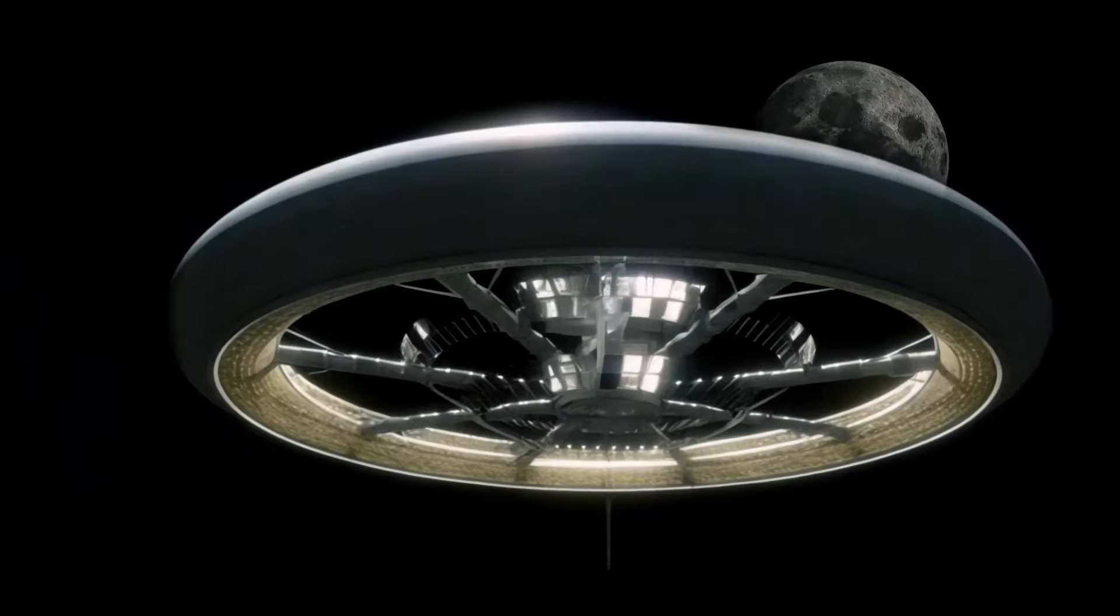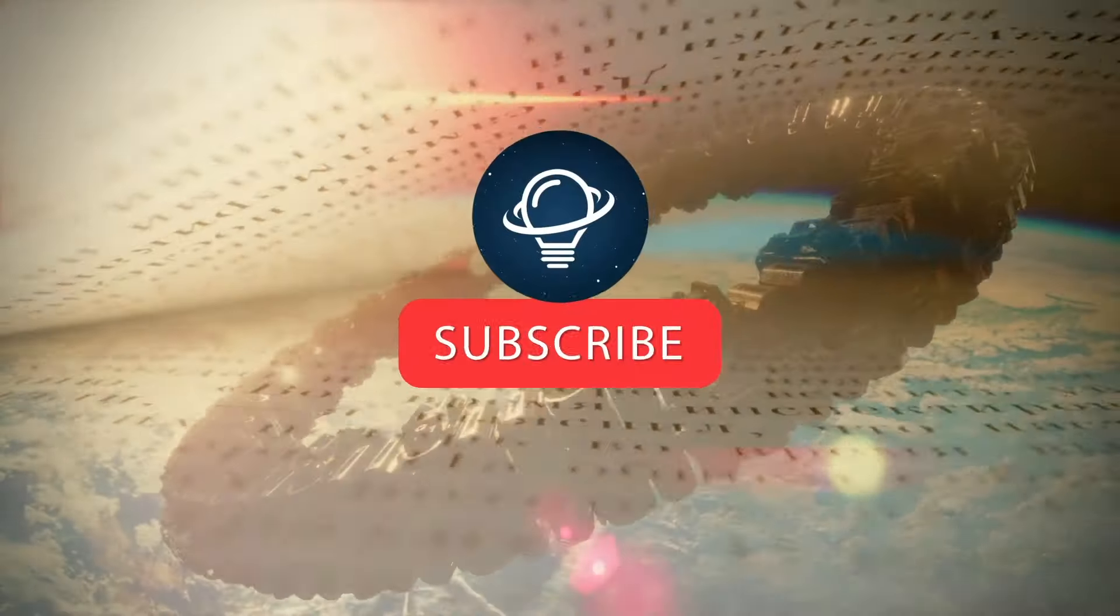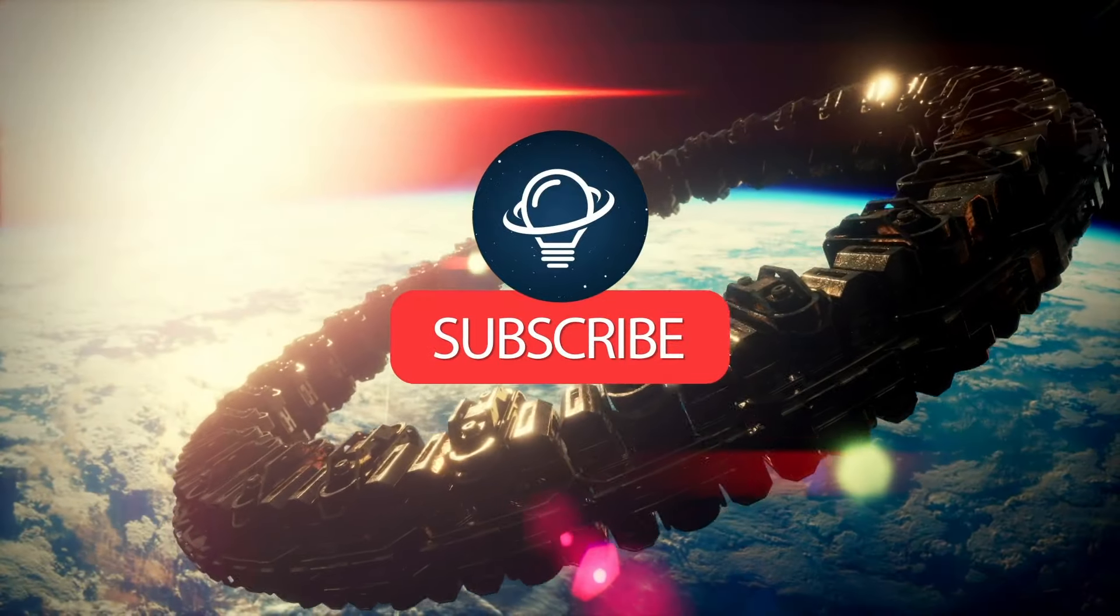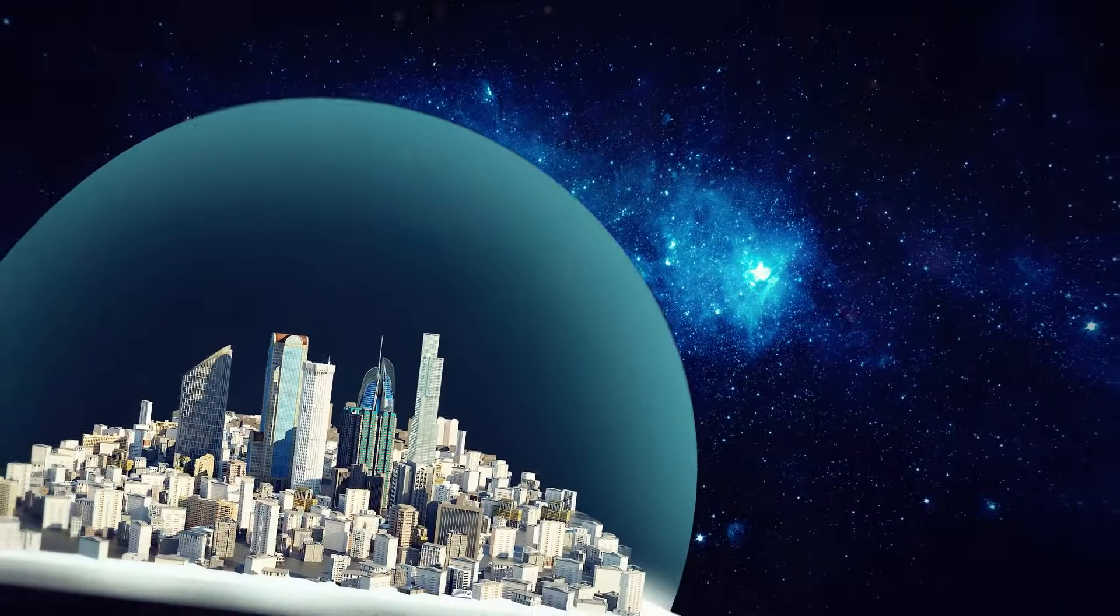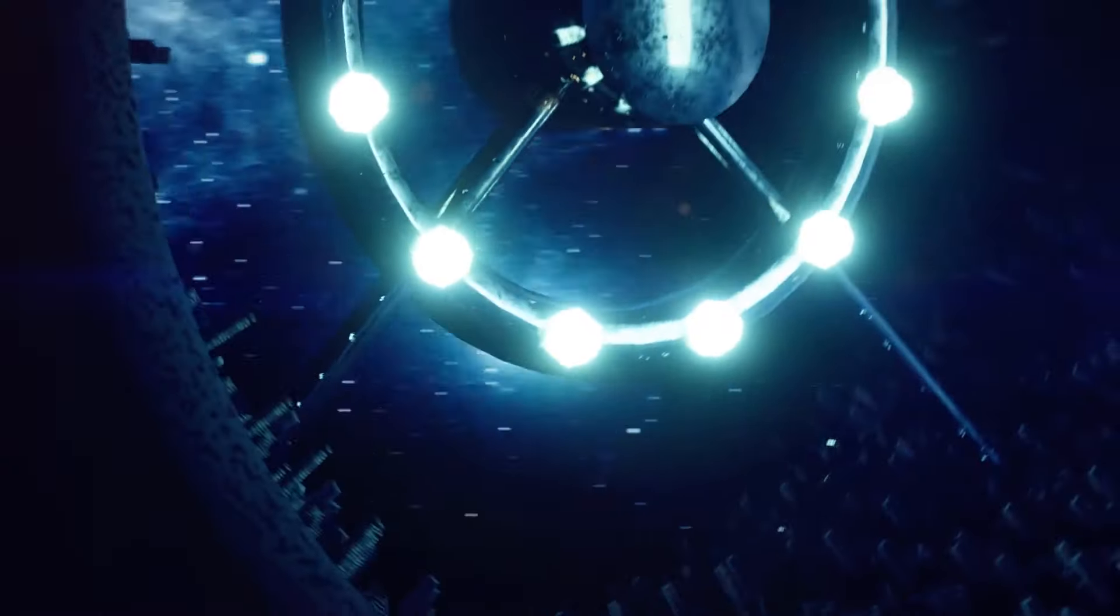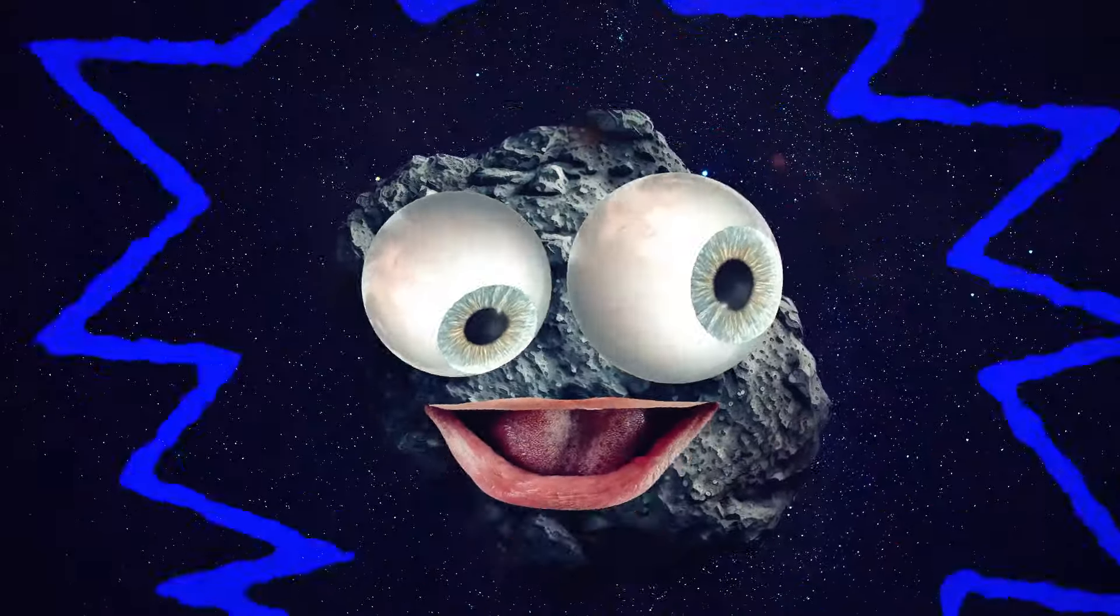All the energy necessary for the functioning of the Stanford Torus will come from solar power. People will use it for agriculture, illumination, and heating the station. Electricity generated from solar energy will also be used for everyday life, for example, for powering household appliances and supporting interior lighting.